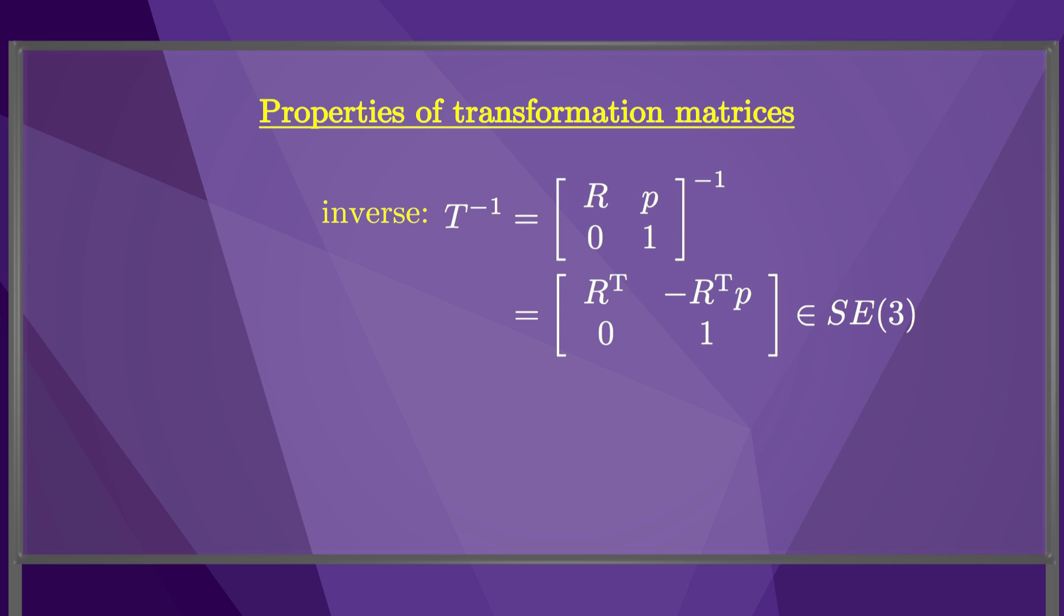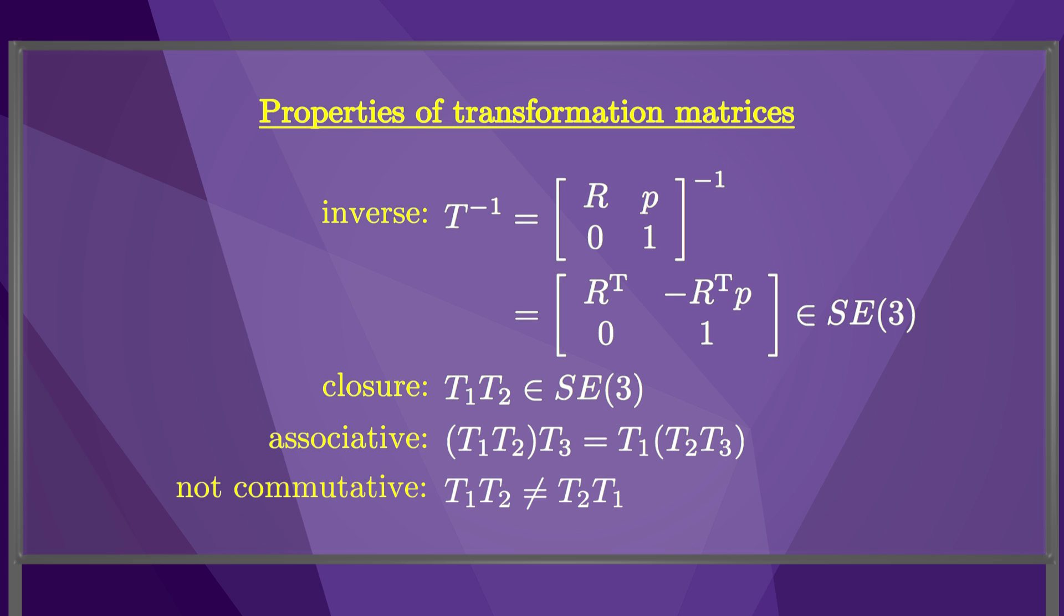Transformation matrices satisfy properties analogous to those for rotation matrices. Each transformation matrix has an inverse such that T times its inverse is the 4 by 4 identity matrix. The product of two transformation matrices is also a transformation matrix. Matrix multiplication is associative, but generally not commutative.